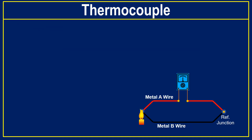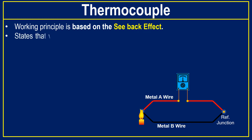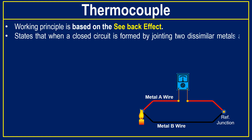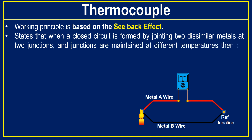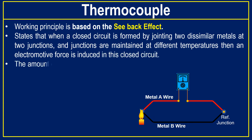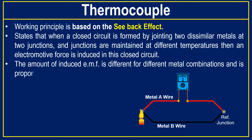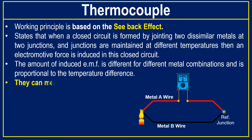The thermocouple working principle is based on the Seebeck effect. This effect states that when a closed circuit is formed by joining two dissimilar metals at two junctions and these junctions are maintained at different temperatures, an electromotive force is induced in the closed circuit. The amount of induced EMF is different for different metal combinations and is proportional to the temperature difference at the two junctions.